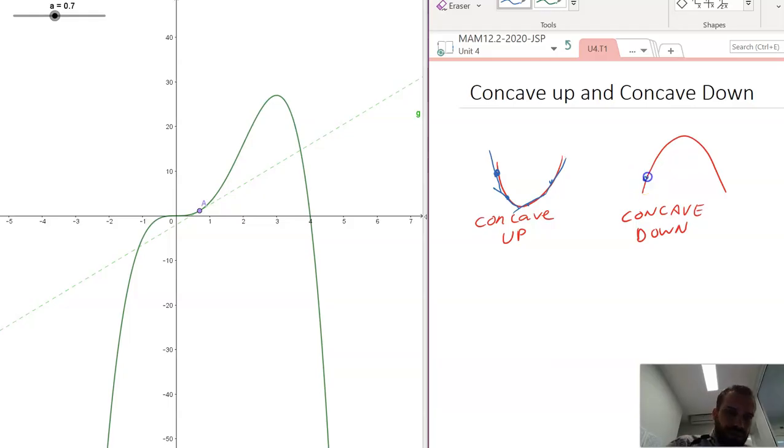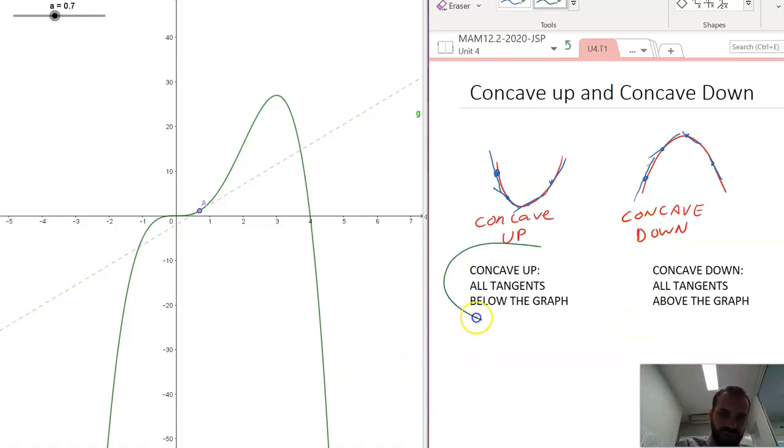Similarly, concave down, all of the tangents are above the graph, and that is a good definition of concave down. Two very important definitions here and here. Now, let's come back to our graph over here.